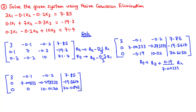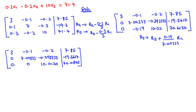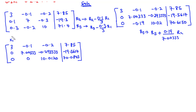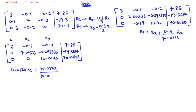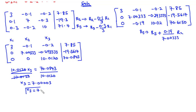The next step is back substitution. From the last row, we have 0·x1 plus 0·x2 plus 10.0120·x3 = 70.0843. Dividing both sides by 10.0120 gives x3 = 7.000003, so we conclude that x3 = 7.